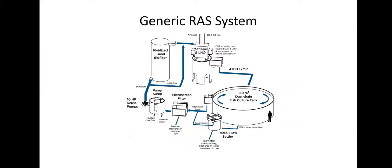This is a bit more technical detail around that same concept. You've got your holding tank with fish that you're throwing food into. You've got a mechanical filtration process — here it's a swirl separator or a radial flow settler — and a micro screen filter, commonly called a drum filter. You've got your pump sump and then you can pump into a fluidized sand biofilter, or a moving bed biofilter. The water then goes into a CO2 stripper and an LHO — a low head oxygenator — where oxygen is added before the water goes back into the tank.